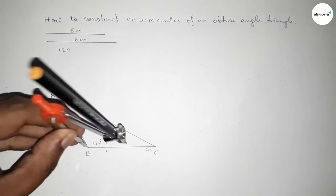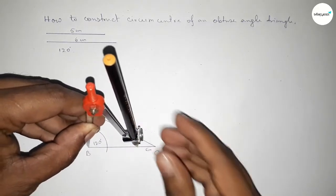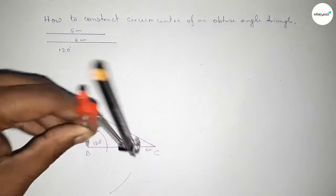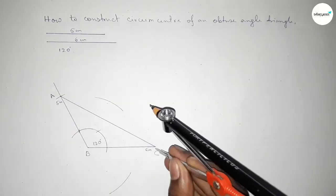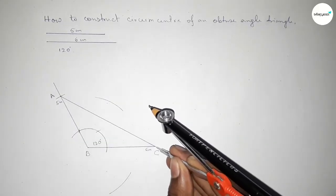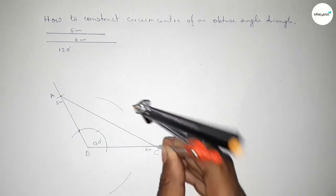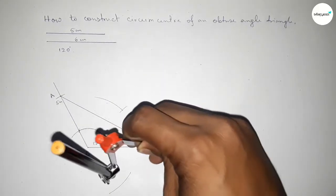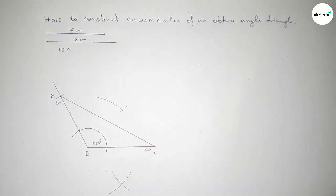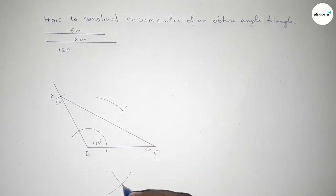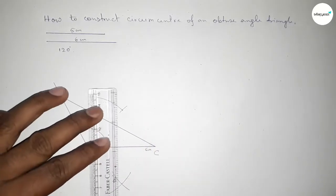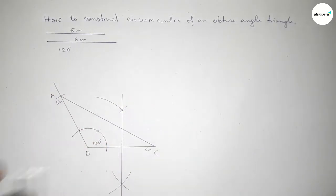Now we have to bisect the line BC. Putting the compass here and taking greater than half of BC, drawing an arc. Both curves intersect at a point — now joining this bisector.